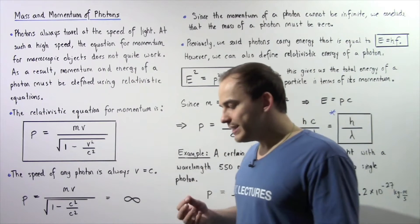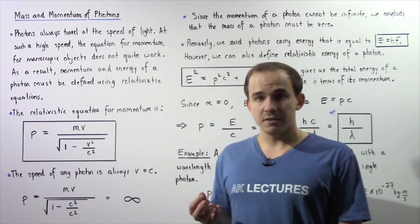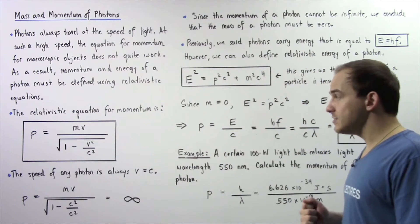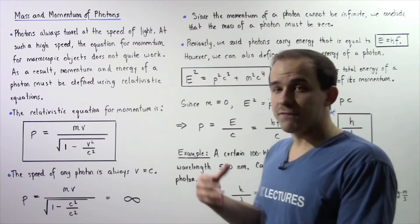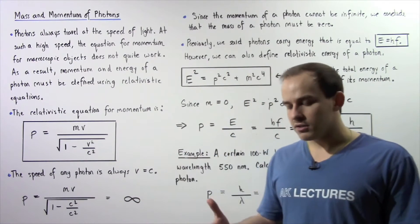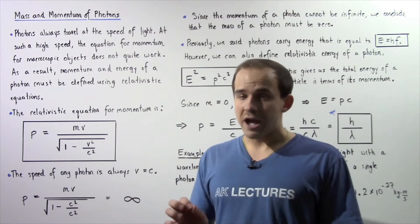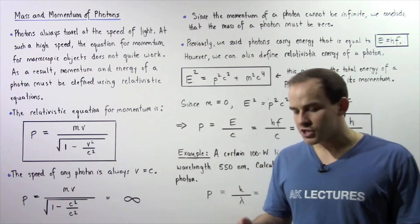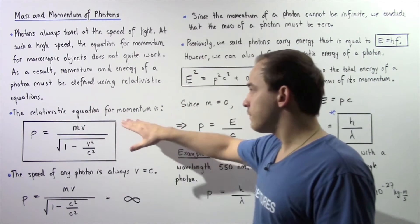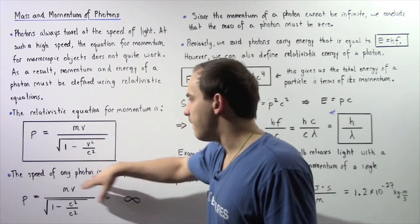How exactly do we define the momentum and energy of a particle that is traveling at the speed of light, or at a speed very close to the speed of light? At very high speeds, the equations for momentum and energy that we use for macroscopic objects do not quite hold. To calculate the momentum of a particle traveling at a very high speed, we must use a relativistic equation. The relativistic equation for momentum for a particle traveling at speed V is given by the following equation.